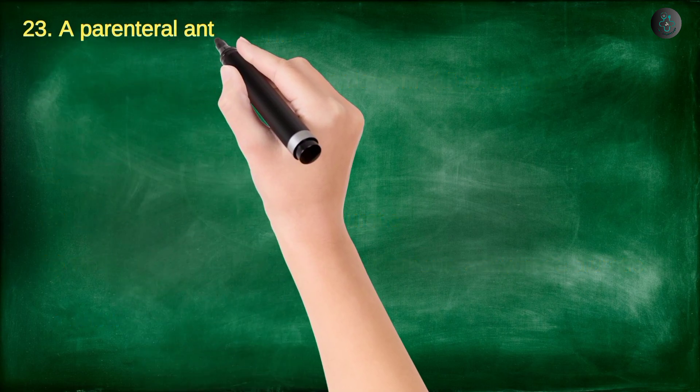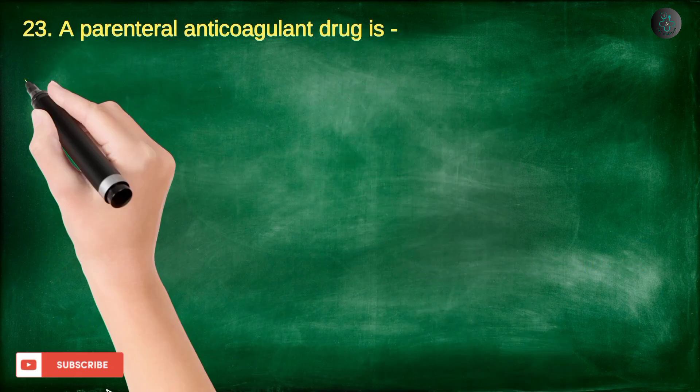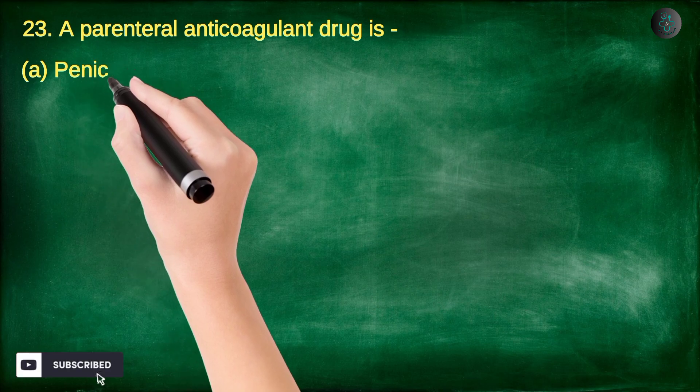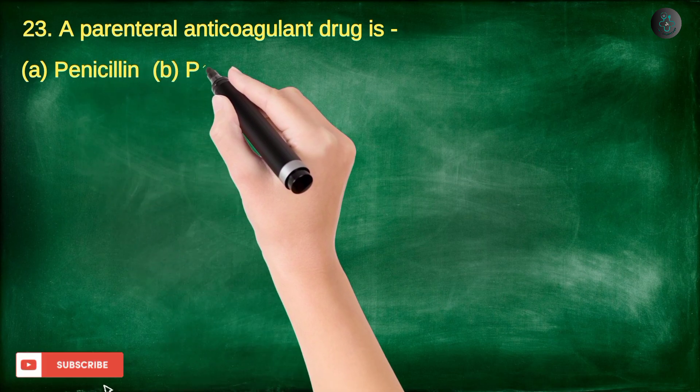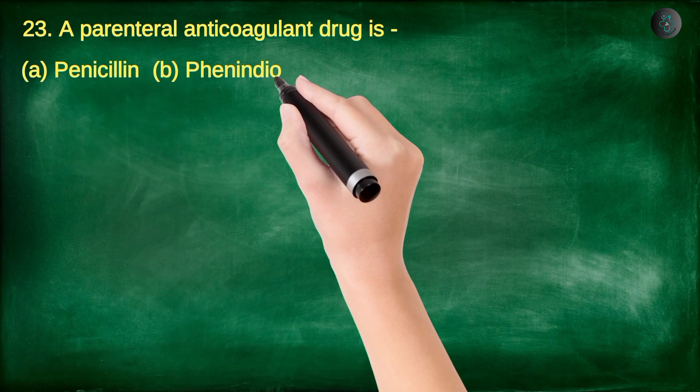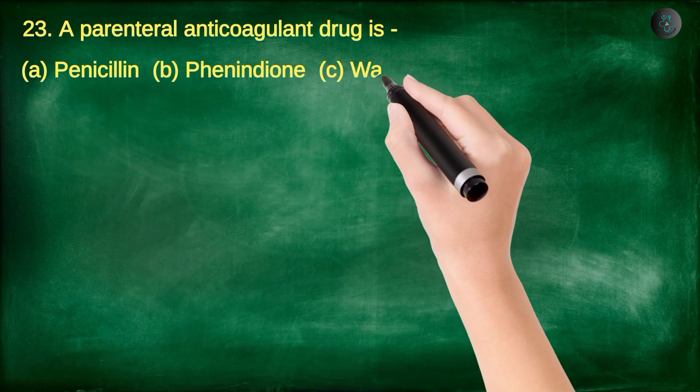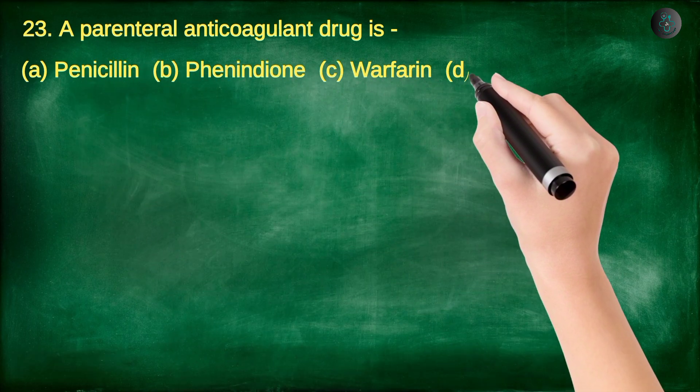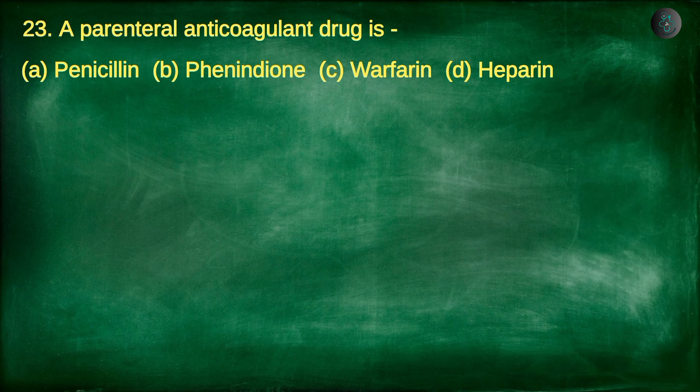Question number 23. A parenteral anticoagulant drug is: A. Penicillin, B. Phenindione, C. Warfarin, D. Heparin.